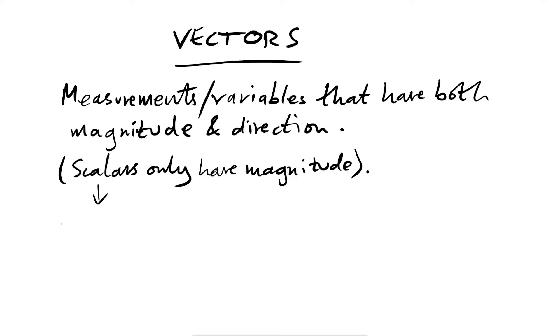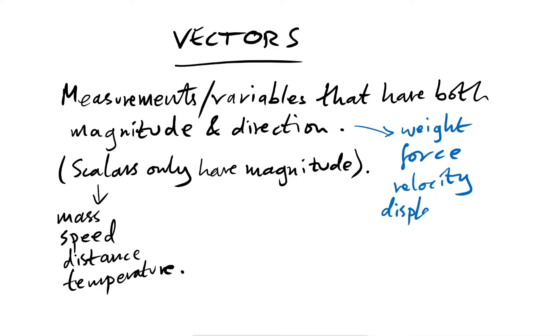Some examples of scalars are mass, speed, distance, temperature. These don't really have direction. Vectors, on the other hand, some examples would be weight, any force for that matter, velocity, which is just speed with a direction, displacement, which is just distance with a direction, acceleration as well, and there are other ones as well.